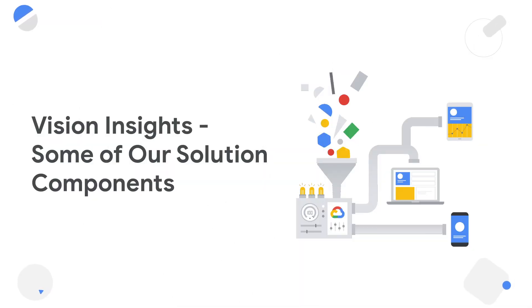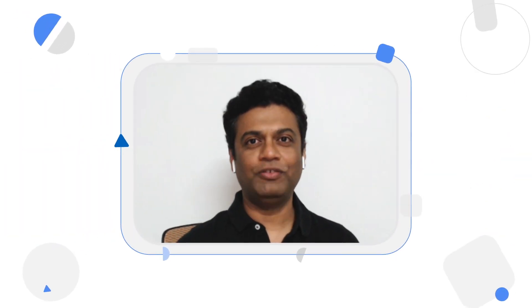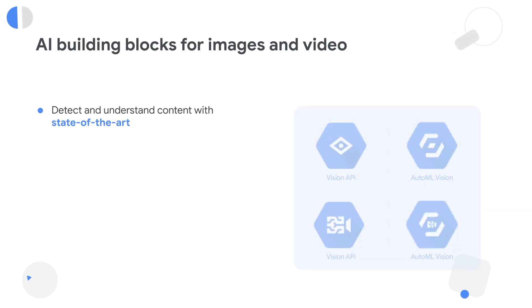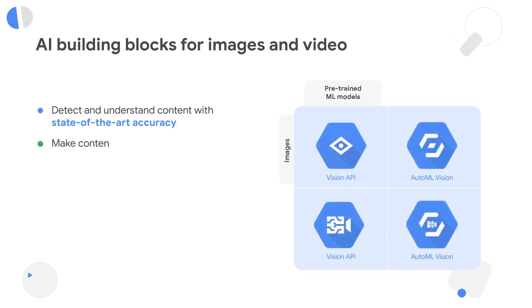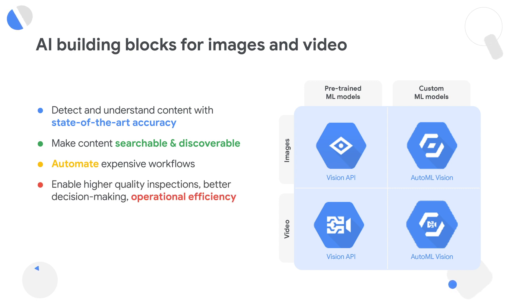However, the insights from pre-trained models are very generic and may not cater to specific domain needs. If you need domain-specific insights, you would need to build custom models. Google provides a couple of options: the first is a low-code, no-code approach called AutoML, which helps you build complex models on your dataset with zero lines of code. The second option is to build custom models using popular machine learning frameworks on Google's ML platform, Vertex AI.